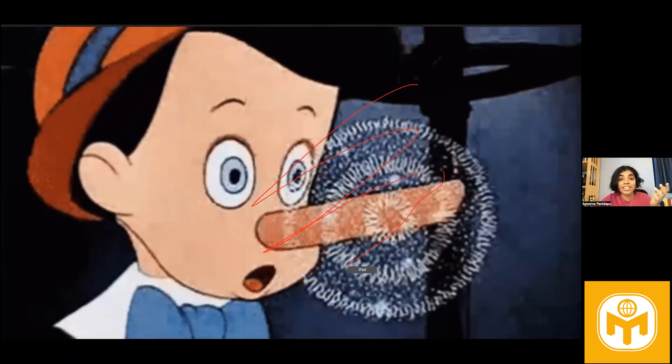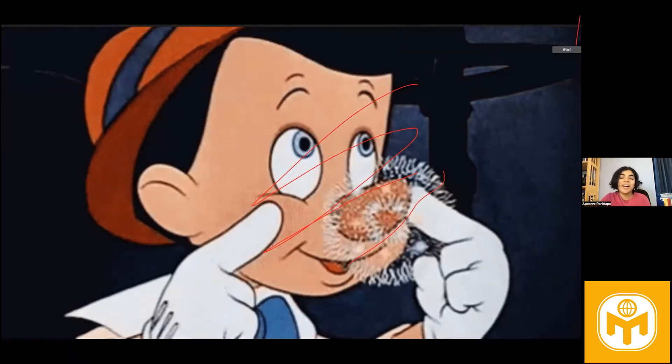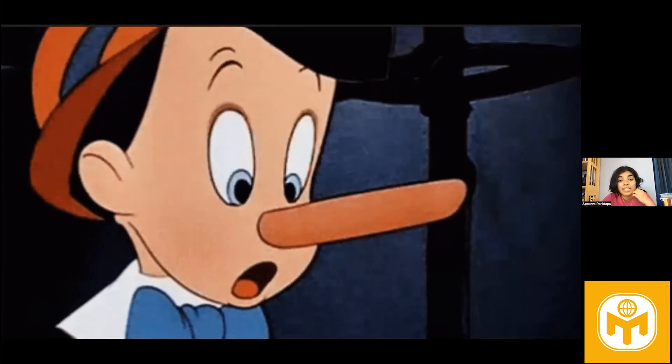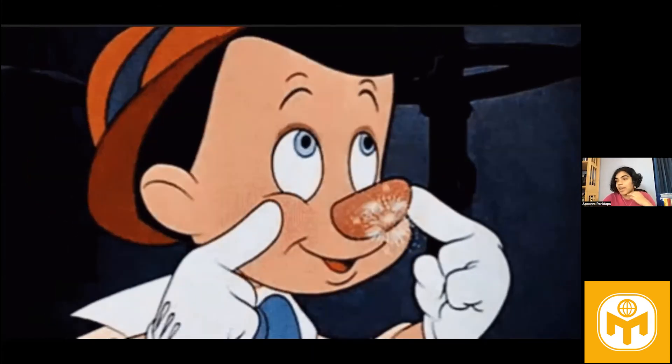I discovered that these contradicting and confusing statements like my nose will grow now are part of something known as the liar's paradox, one of the most famous, everlasting and debated paradoxes in logic.